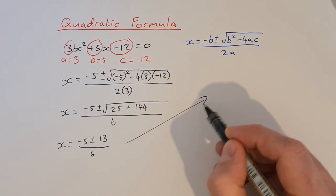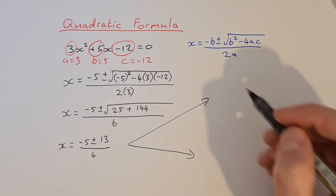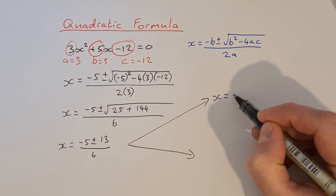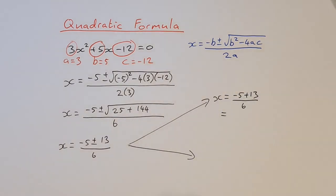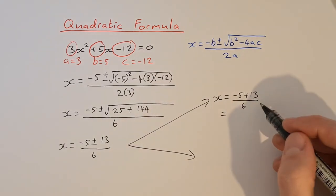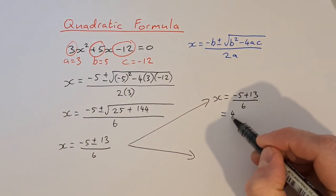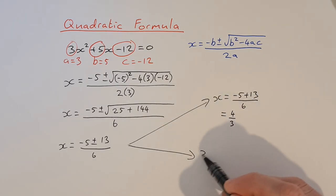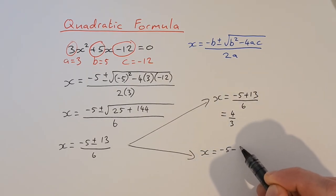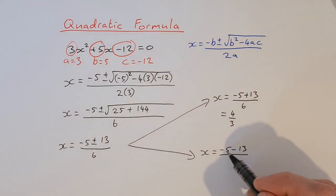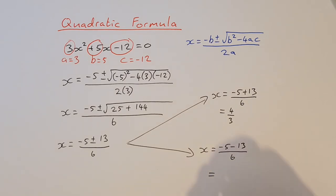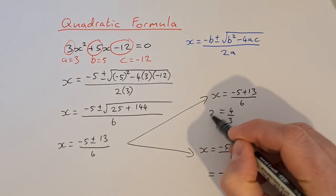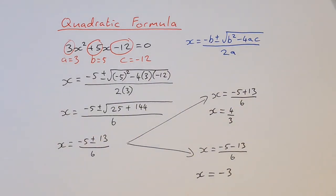I have my two answers. First: x equals minus 5 plus 13 over 6 — minus 5 plus 13 is 8, and 8 divided by 6 is 4 over 3. Second: x equals minus 5 minus 13 over 6 — minus 5 minus 13 is minus 18, and minus 18 divided by 6 is minus 3. So my two answers are x equals 4 over 3 and x equals minus 3.